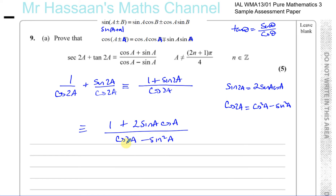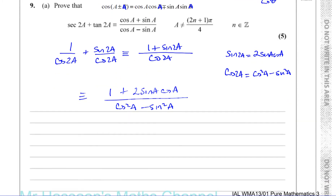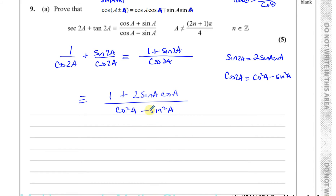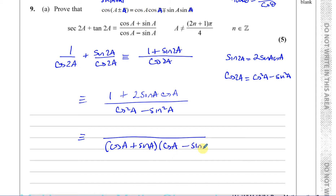Now you'll notice the denominator is actually the same as (cosA + sinA)(cosA − sinA), because this is a difference of squares. So I'll deal with the denominator first and write it as cosA plus sinA times cosA minus sinA.